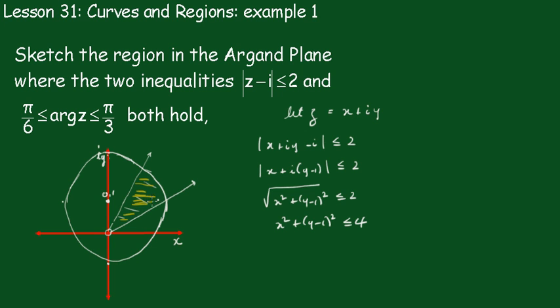There's an easier way of doing this. Geometrically, we're saying the distance from i, that is the point (0, 1), is always less than or equal to 2. That's a circle at (0, 1) with radius 2.